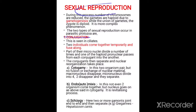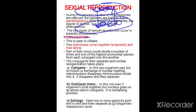Consider this is one protozoan and this is another protozoan — their macronuclei divide and these pronuclei are exchanged by the ciliates. Such type of sexual reproduction is called conjugation.